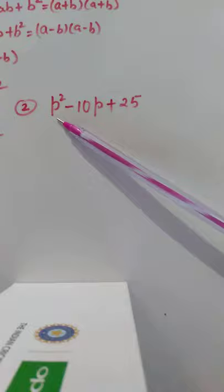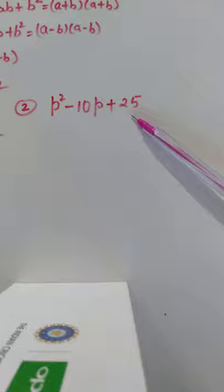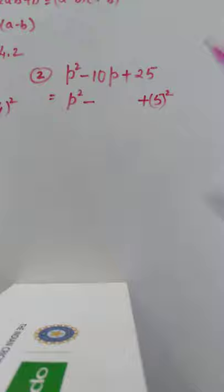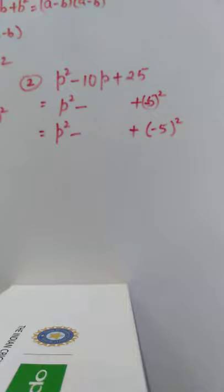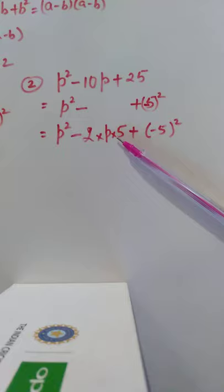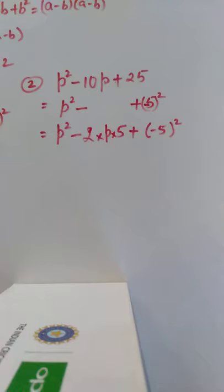Next: p squared minus 10p plus 25. We can see that p squared is the square of p and 25 is the square of 5. Because of the minus sign, we use the a minus b whole square identity. Writing the middle term: 2 times p times minus 5 gives minus 10p, which matches. So the factorized form is p minus 5 whole square.